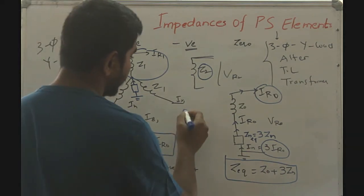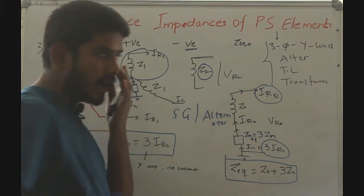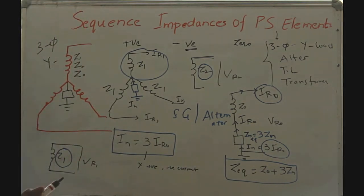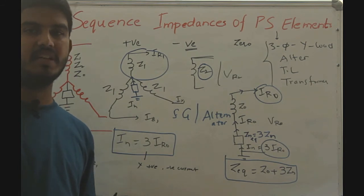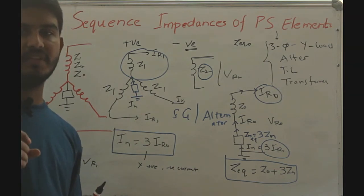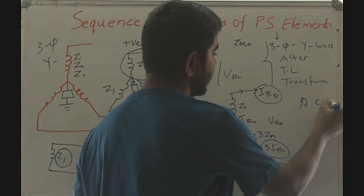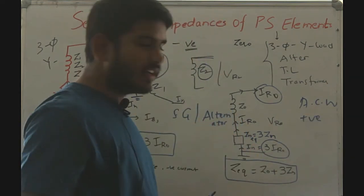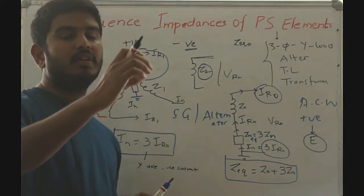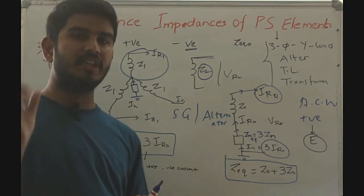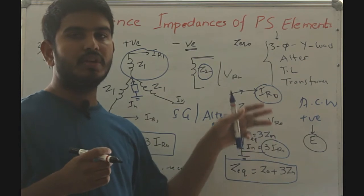For the synchronous generator or alternator, there is an induced EMF due to rotation of the prime mover. This induced EMF rotates in the anticlockwise direction, which is treated as the positive phase sequence. Therefore, in the alternator, we have induced EMF only in the positive phase sequence network, since the induced EMF cannot rotate backward. We consider the EMF present only in the positive sequence network.